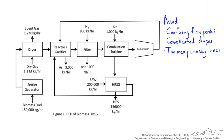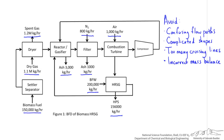You might have also noticed that almost 100,000 kilograms per hour of mass is missing in this process. One of the biggest mistakes you can have on a block flow diagram is an imbalance between inlet and outlet mass flow rates. Always check your work, make sure you haven't confused mass and moles, and sum the inlet and outlet flows to make sure there's no discrepancy.